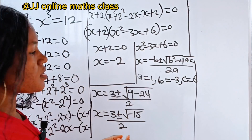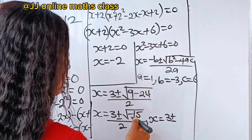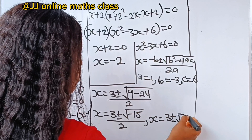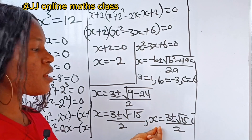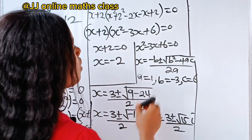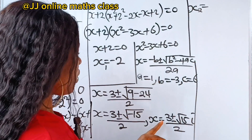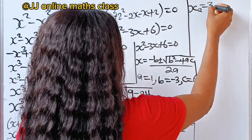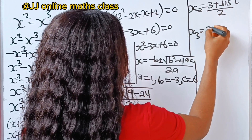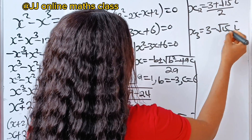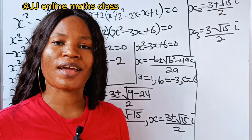We can now express this as x equals 3 plus or minus square root of 15i, divided by 2. So we have two values: x₂ equals 3 plus root 15i, divided by 2, and x₃ equals 3 minus root 15i, divided by 2. These are the three values of x. Thank you so much for watching, and have a lovely day.